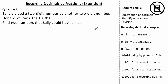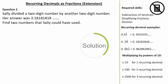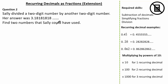Now let's have a look at a slightly different question. Here it states Sally divided a 2-digit number by another 2-digit number. Her answer is 3.181818... so on and so forth. We're asked to find 2 numbers that Sally could have used. See if you can give it a go and press pause if you need. So let's start by identifying what 3.181818 represents. Here you can see 3.181818 is exactly the same as 3.18 with the dot above the 1 and the dot above the 8.